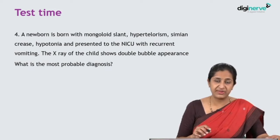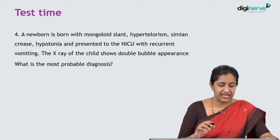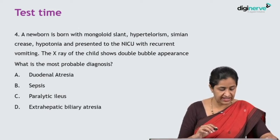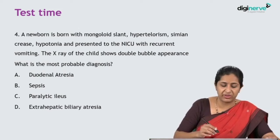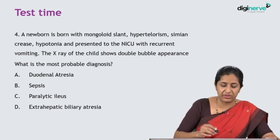Question 4: A newborn is born with mongoloid slant, hypertelorism, simian crease, hypotonia, and comes to the NICU with recurrent vomiting. The X-ray shows double bubble appearance. What is the most probable diagnosis? When you have a child with Down syndrome presenting with recurrent vomiting and the X-ray showing double bubble appearance, the correct answer is duodenal atresia.